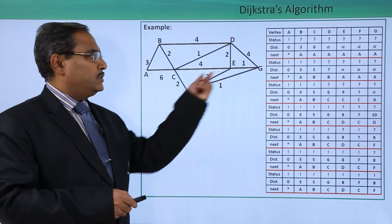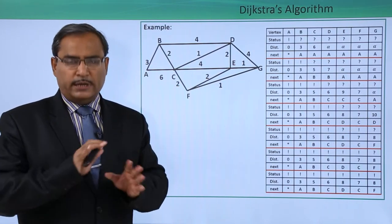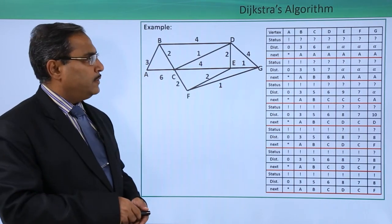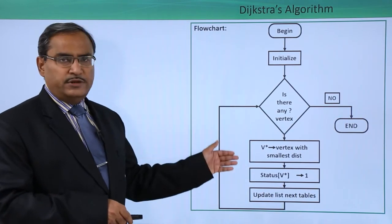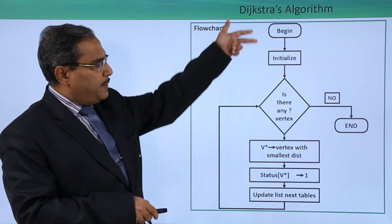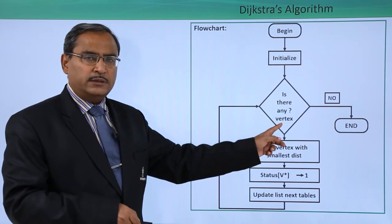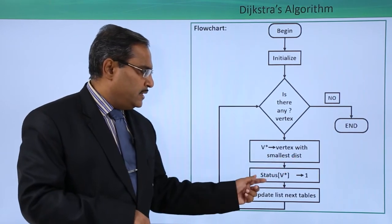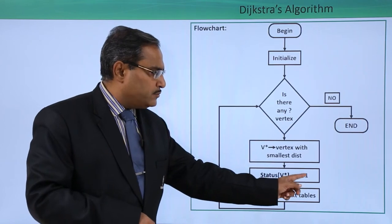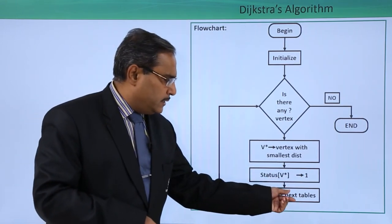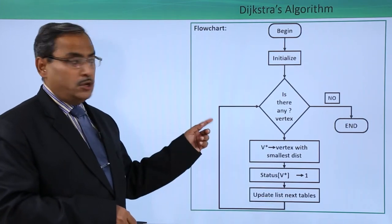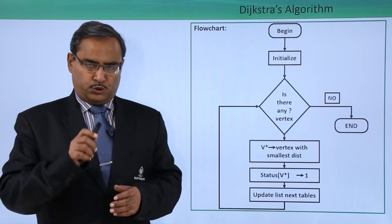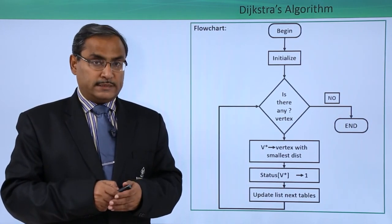If these nodes are occupied by bridges or routers, a routing table can be constructed for each one. The flowchart for Dijkstra's algorithm starts with initialization, then checks if any '?' (unconsidered) vertex remains — if no, end; if yes, set v* to the vertex with the smallest distance, set status[v*] = '!', update the dist and next tables, and repeat. This is how Dijkstra's algorithm works to decide routing tables.